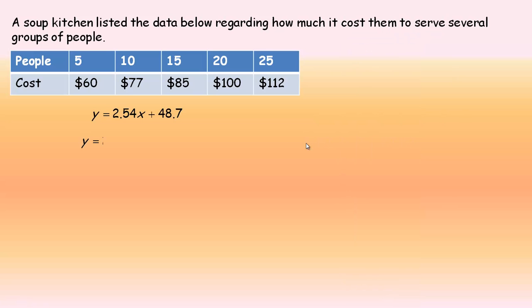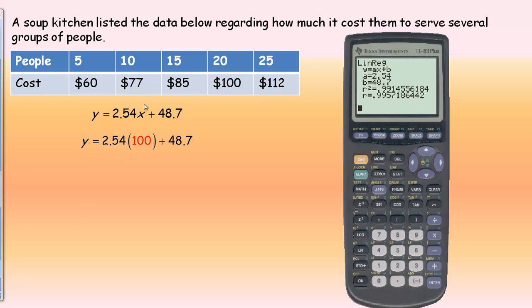It does default to pick the values from list 1 and list 2, but if you have different lists, you would go second list 1, comma, second list 2. There's my rate or slope, 2.54, and the y-intercept is 48.7.